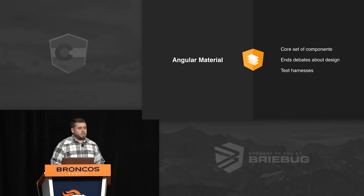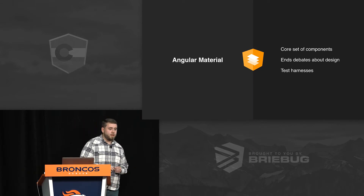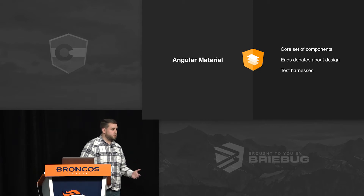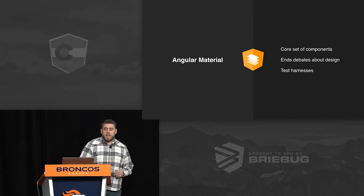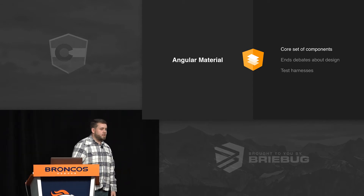The first bit of this ecosystem puzzle that I want to unravel is Angular Material. Angular Material is a library developed by the Angular team — written by Google engineers. It's free, and it's an open source project that you can use inside your company. The first part of Angular Material that transforms Synapse is that it provides us a core set of components that we can use to build our applications.